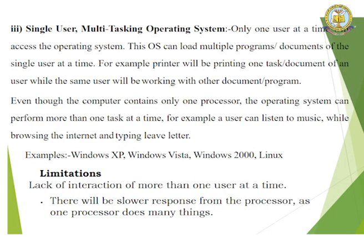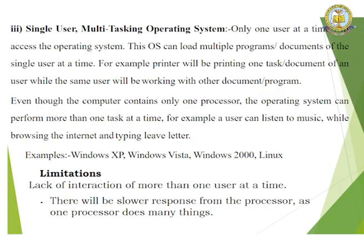Single user multi-tasking operating system allows only one user at a time to access the OS but can load multiple programs or documents simultaneously. For example, a printer can be printing one document while the user works on another. Even though the computer has only one processor, the OS can perform more than one task at a time — for example, the user can listen to music while browsing the internet and typing a document. Examples include Windows XP, Windows Vista, Windows 2000, and Linux. Limitations include lack of interaction of more than one user and slower processor response.